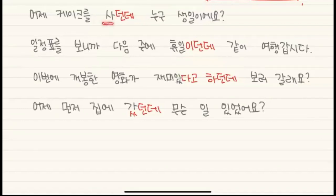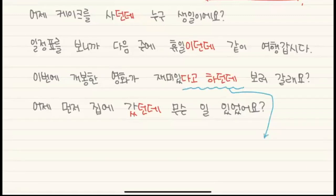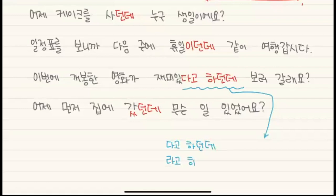To summarize: verb or adjective with 던데; noun with 이던데; and for quotes: 다고 하던데, 라고 하던데, 자고 하던데, 야고 하던데 — you can use all of them. For past tense already done, after which you saw or heard something, use past tense with 던데. There is also an even shorter version you can use.